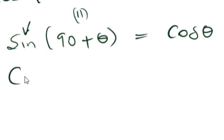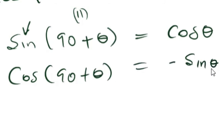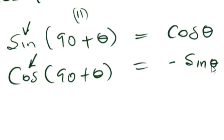However, when you have cosine(90 plus theta), the value you get will be negative sine theta. The reason for that is because cosine is negative in the second quadrant, and that is reflected in the answer you get when it is 90 plus theta.